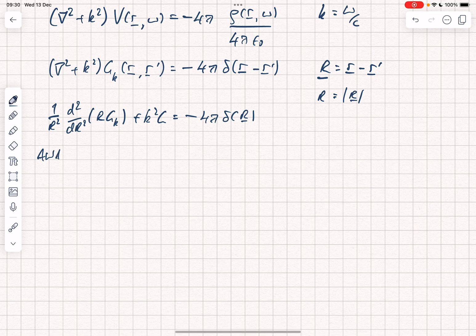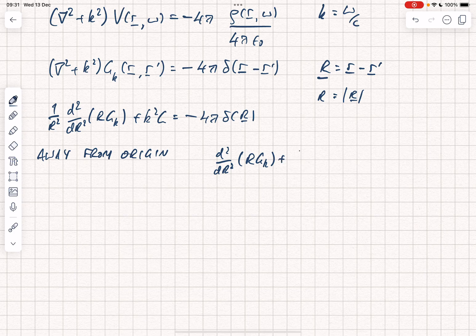Away from the origin, we can remove the source term again. We have d2 by dr squared of r gk plus k squared r gk equals 0.